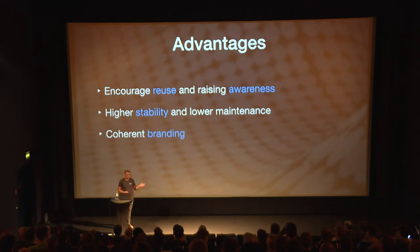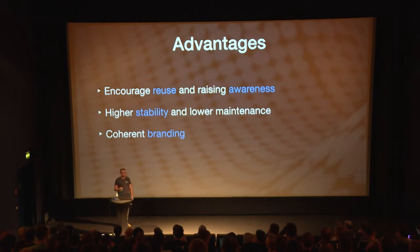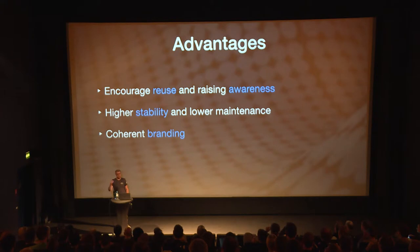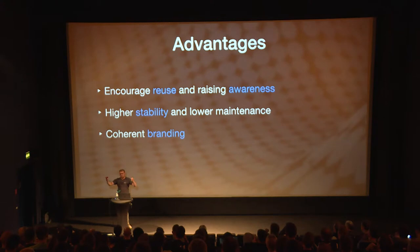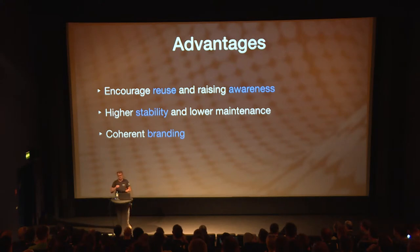With coded style guides you can also ensure a coherent branding of your app. Since all your components are rendered in isolation, you can much more easily see if you have, for example, three or four different shades of blue instead of one. This is very hard to notice even for a designer's eye if you have one button on one screen and another with a slightly different blue on another screen. But if they are all rendered in one coded style guide, it's very easy to see and you can fix it.